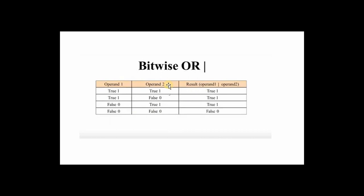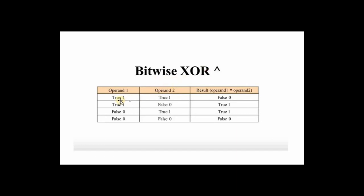For bitwise XOR: if both operands are the same — for example, true and true (one and one) — we get zero. Both operands must be different to get a true result. True XOR false gives one, false XOR true gives one, zero XOR zero gives false, and one XOR one gives zero.